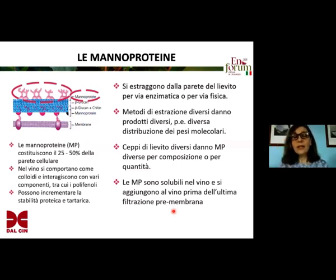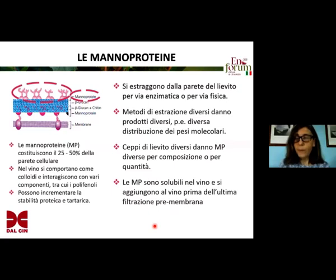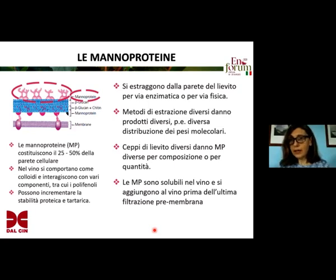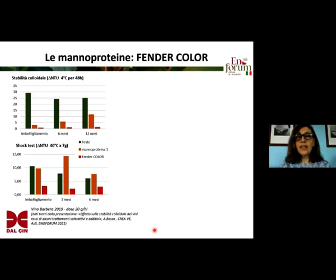Manoproteins are polysaccharides that are derived from the cell wall of yeast. We know their properties, which entail an increase in the prosaic and tartaric stability of a wine. These components act as colloids in wine. But also in this case, we can say that there is not one MP — it is a class of compounds with different molecular weights and compositions, in that there can be more prosaic or glucidic portion in a manoprotein. Differences depend on the strain of yeast they were extracted from and the way by which they have been extracted, which can be enzymatic or physical. Certainly, different extraction systems lead to different products.